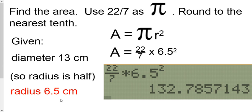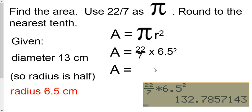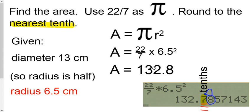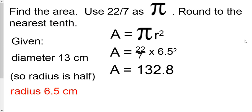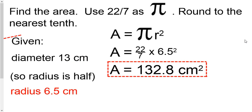Type it into your calculator. In this case it went ahead and gave us the decimal right away, so we don't have to go any further. This one says round to the nearest tenth — there's your tenths place. Look to the right of it: there's an 8 there, so that makes the 7 go up to an 8. This will be 132.8, and we're using centimeters, so it will be centimeters squared. There's your answer.